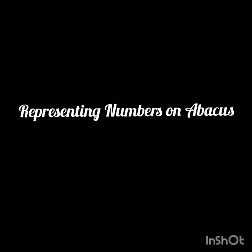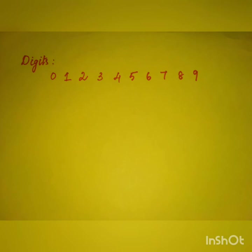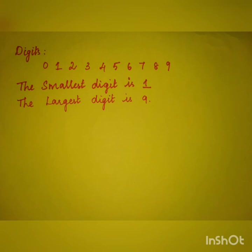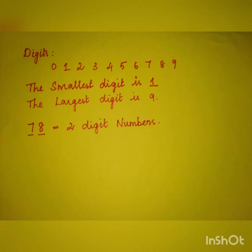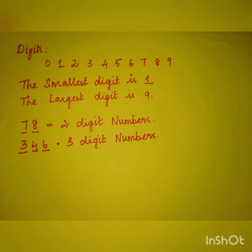Before that, let's have a small recap of what are digits, place value and face value. Digits are any numbers from 0 to 9. The smallest digit is 1 and the largest digit is 9. If the number consists of two digits then it is called two digit numbers, and if the number consists of three digits then it is called three digit numbers.